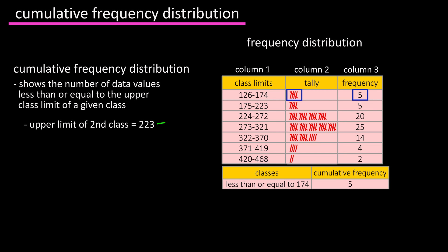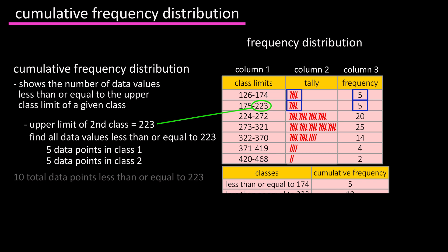Next, we look at the upper limit of the second class and see that number is 223. So we want to find all of the data values in the data set that are less than or equal to 223. We again look at either the tally or the frequency and see that there are five data points in class one and five data points in class two. So the total number of data points that are less than or equal to 223 are 10.